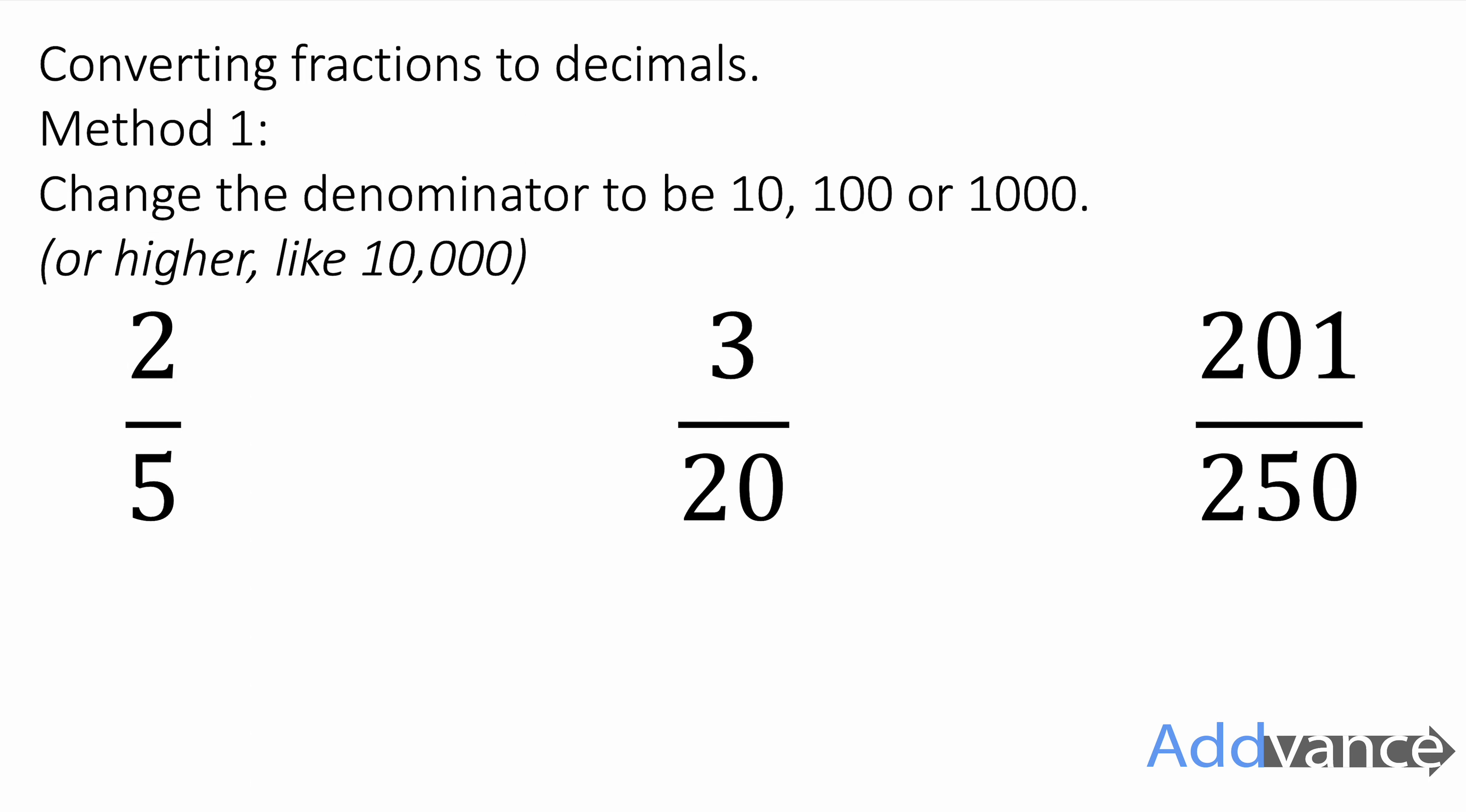So we're going to convert from fractions to decimals first. There's two methods to do this, and here's the first method. We're going to change the denominator to be 10, 100, or 1000. You can do this for quite a lot of numbers.